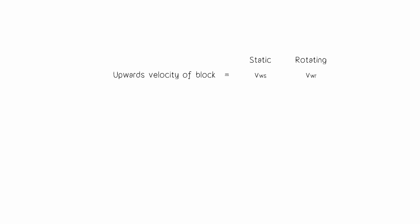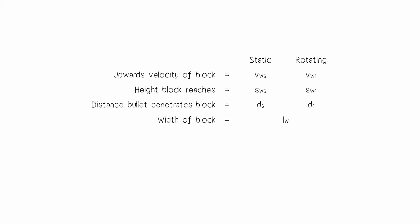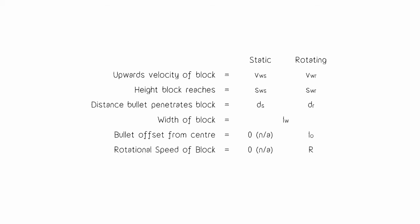The upward velocity of the block the moment after impact is Vws for the static and Vwr for the rotating. The height the block reaches is Sws for static and Swr for rotating. The distance the bullet penetrates the block — the main part of this theory — is ds and dr. Then there are variables that only apply to the rotating block: the width of the block, the bullet's offset from the centre, the rotational speed of the block after impact, and the moment of inertia of the block — its resistance to rotational change.